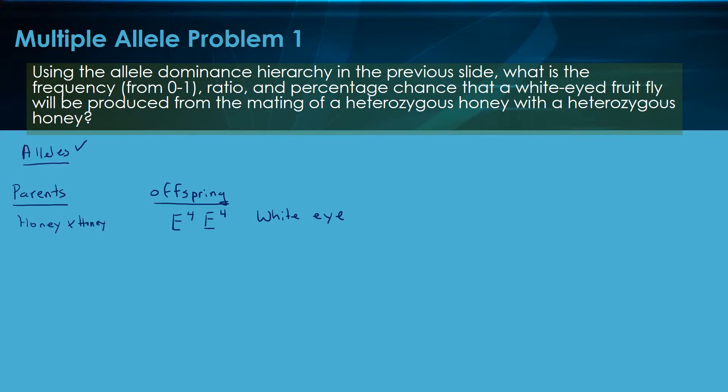Honey heterozygous is going to be E3, E4. That would be honey, heterozygous honey, crossed with another heterozygous honey, E3, E4. Fairly straightforward. We already had our alleles from the previous slide. We know what the parents were talking about. This is the offspring that we want.